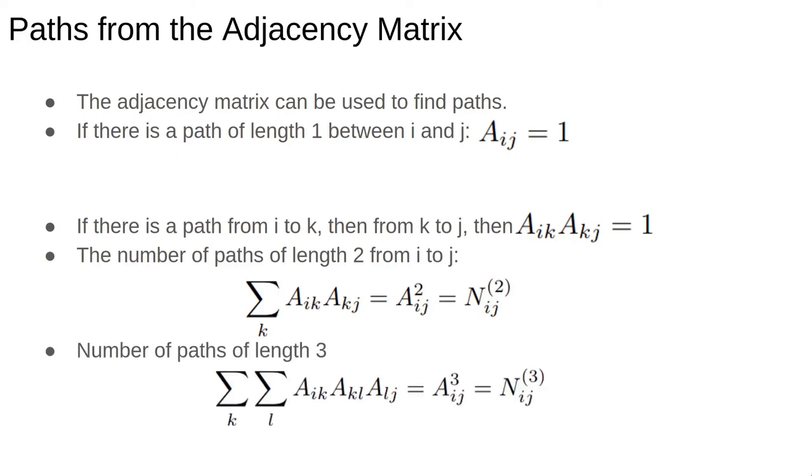We could do a similar thing for paths of length 3. We cube the adjacency matrix, and the result is a matrix where the elements tell us the number of paths of length 3 between every pair of nodes. So powers of the adjacency matrix give us counts of paths. However, this is not a practical algorithm for pathfinding.